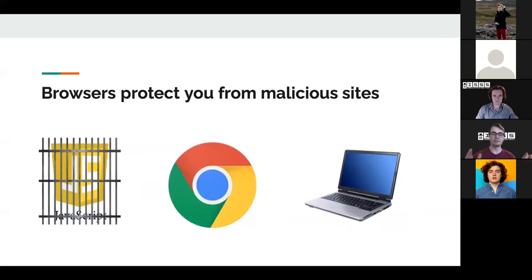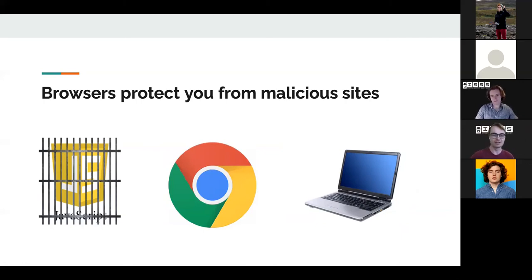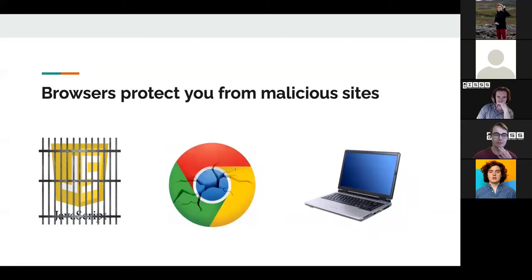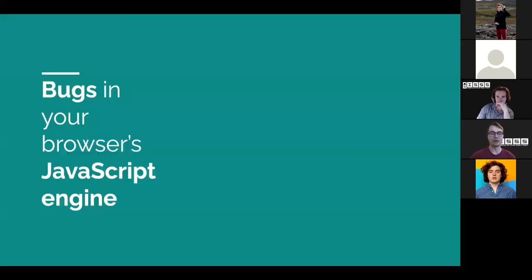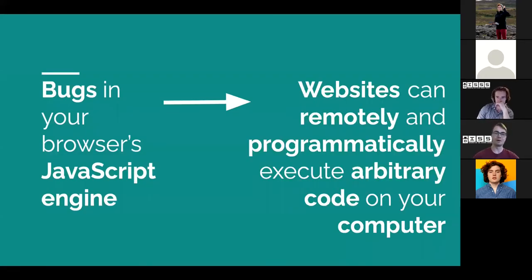The bad thing about having bugs in your browser is that websites get to execute code on your computer. They do this by supplying scripts — Facebook will give you a script to load advertisements or do an animation. Browsers sit in between the JavaScript code and your computer. Basically your browser protects you from other sites, and if bugs exist in the JavaScript engine, websites can just run any code they want on your computer.